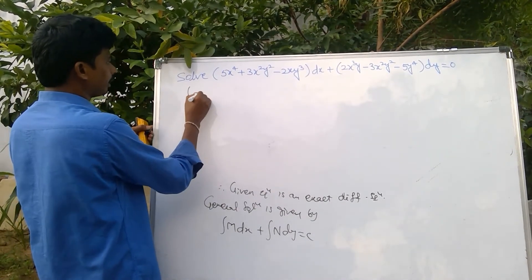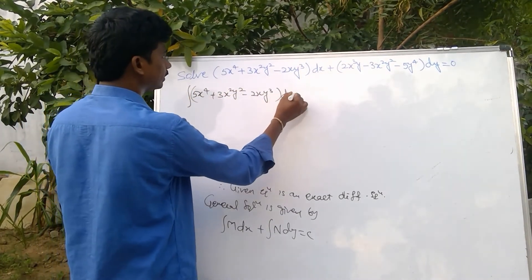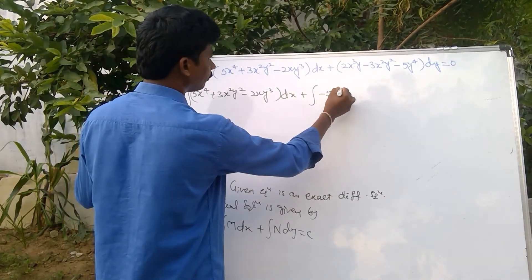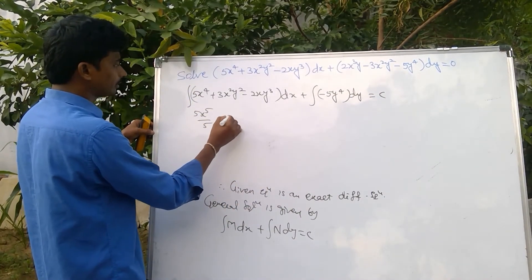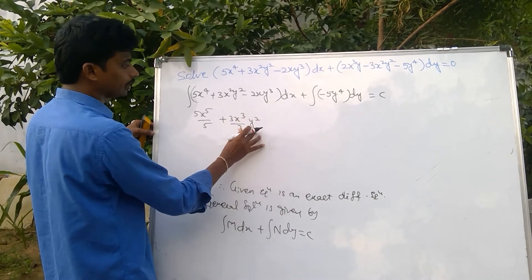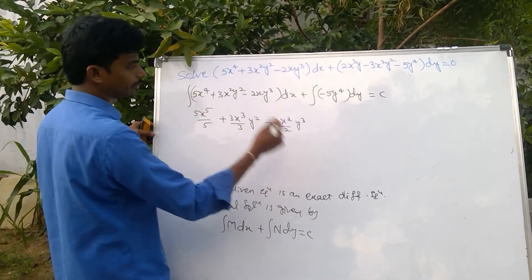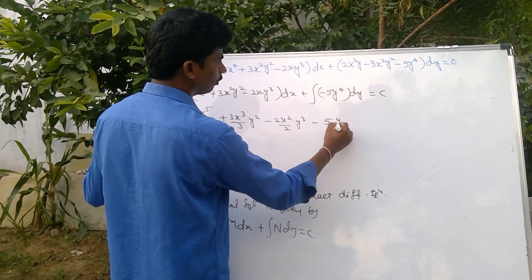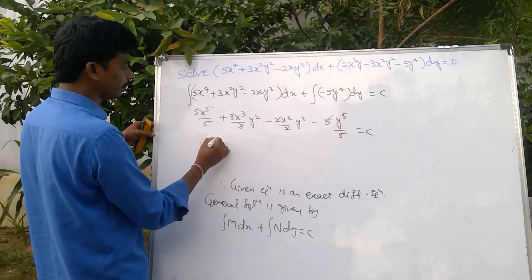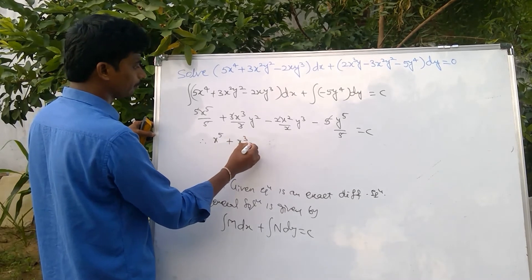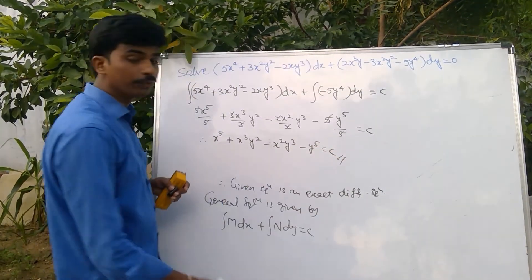Integrating: ∫(5x⁴ + 3x²y² − 2xy³)dx + ∫(−5y⁴)dy = C. This gives 5x⁵/5 + 3x³y²/3 − 2x²y³/2 − 5y⁵/5 = C. Cancelling common factors: x⁵ + x³y² − x²y³ − y⁵ = C.